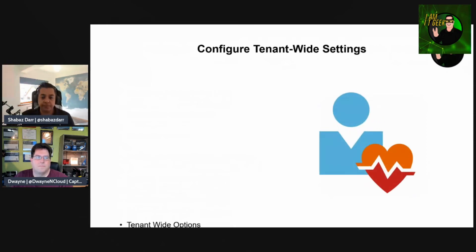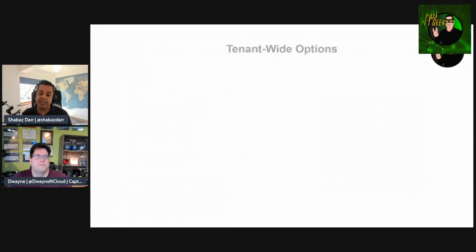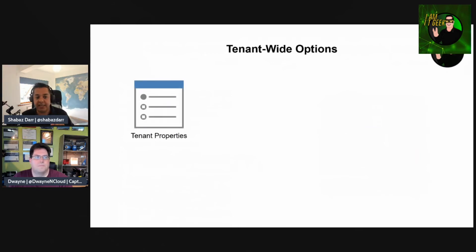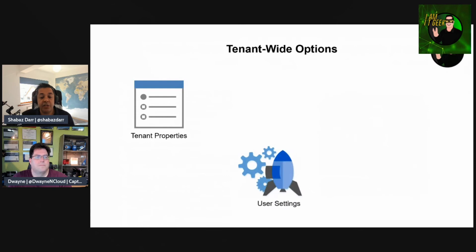Let's move on to the second topic: configuring tenant-wide settings. There are three tenant-wide options to discuss. First is tenant properties, located in Azure AD under the Properties section, where you can configure values like the technical contact. Second are user settings in Azure AD, where you can configure access rights like being able to access the admin portal.